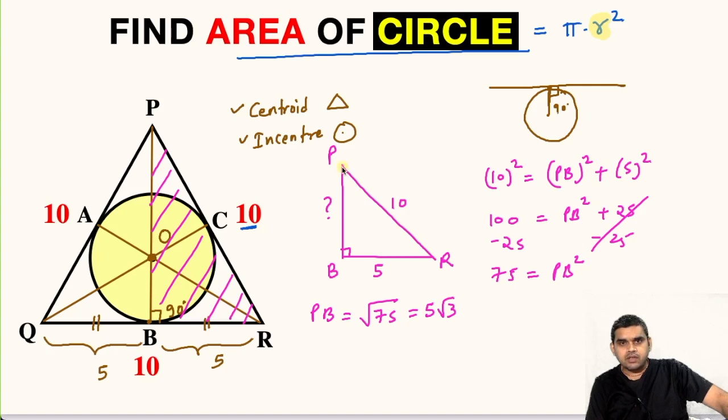Now we have got this length PB as 5 root 3 units. We will use the property of centroid. So on this line segment PB, O lies here. So the property of centroid is that it will divide PB into two parts in the ratio 2 is to 1.